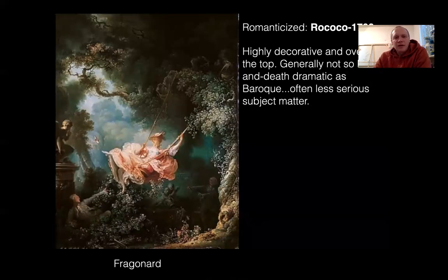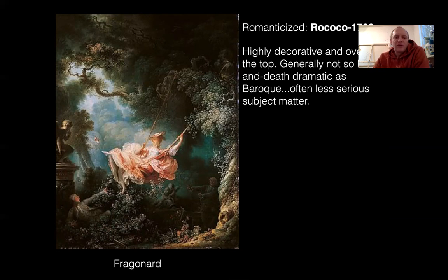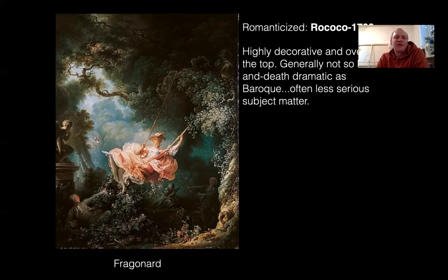And then we've got Rococo. This is frilly, highly decorative, way over the top — generally not life-and-death scenes, way less serious in subject matter. So here we maybe do have indications of romanticism in the sense of love: we can see a Cupid sculpture to the left, the woman on the swing, the guy down in the corner looking up her dress. There's definitely more going on here than at first glance, because she's bright against the background, contrasting well, but the guy in the corner kind of blends in — so it's only after you look at the picture for a while that you see him down there.